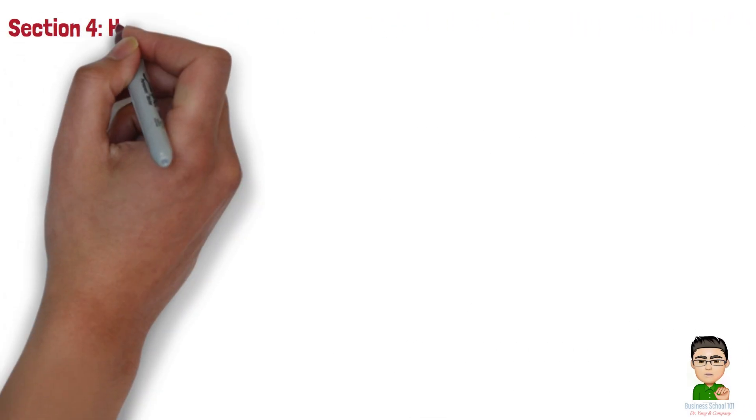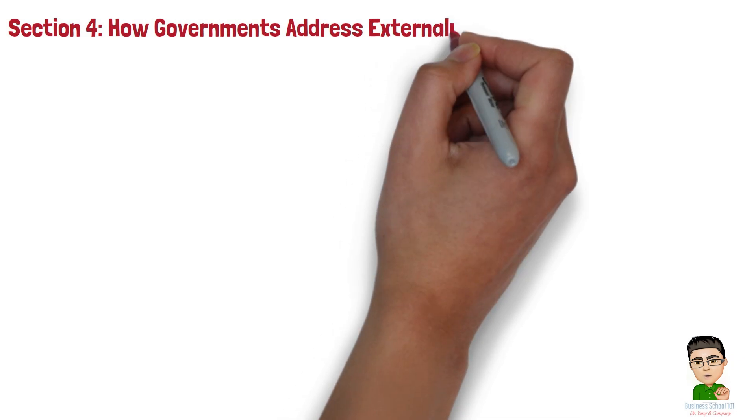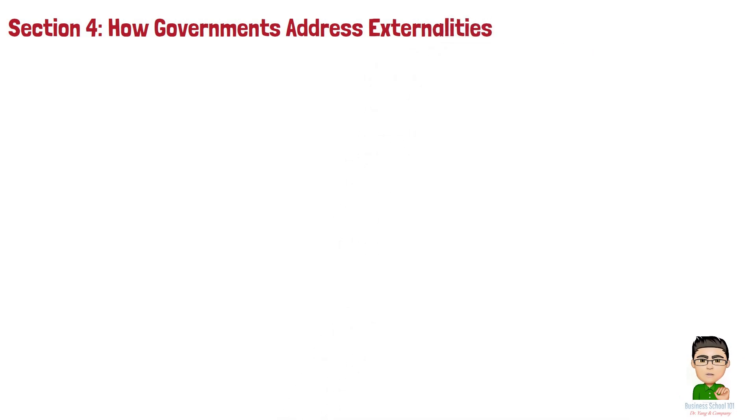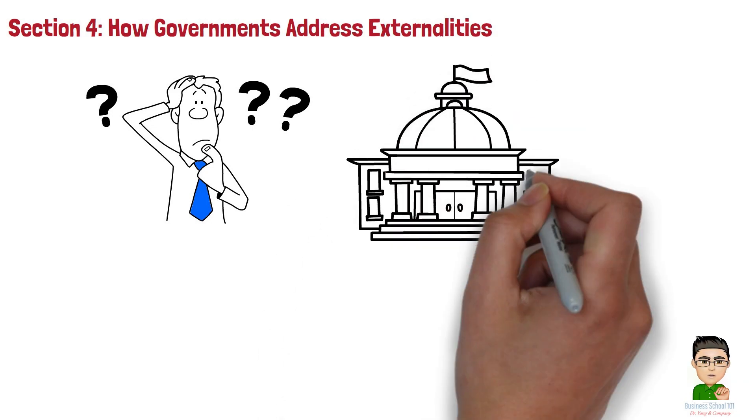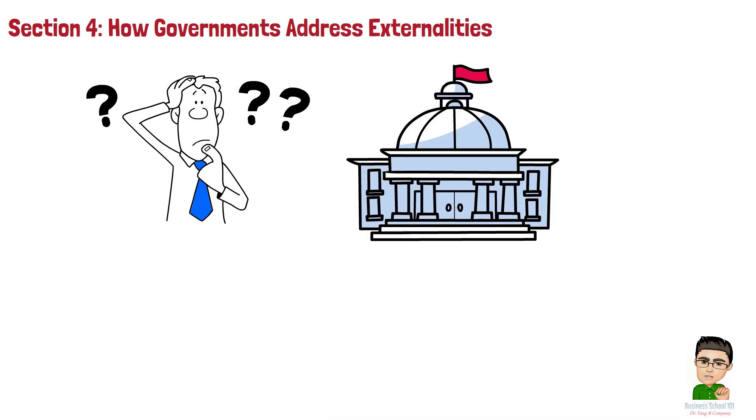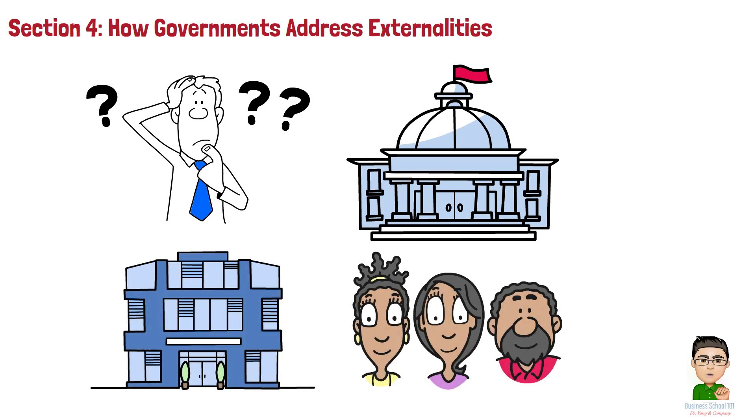Section 4. How Governments Address Externalities. Now we understand both positive and negative externalities. So how do we deal with them? One way is through government intervention. Governments can step in to correct the inefficiencies caused by externalities, making sure that businesses and individuals account for the true costs and benefits of their actions.